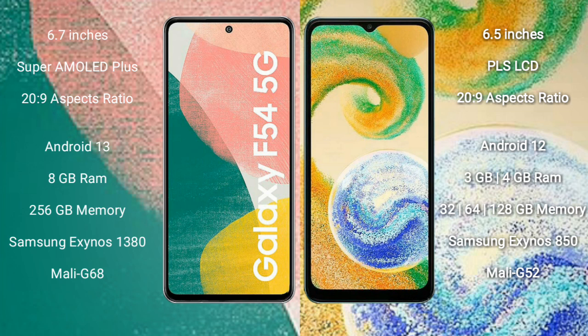Samsung Galaxy A4s comes with 3GB or 4GB RAM and 32GB, 64GB, or 128GB internal storage, Samsung Exynos 850 processor, and GPU Mali-G52.